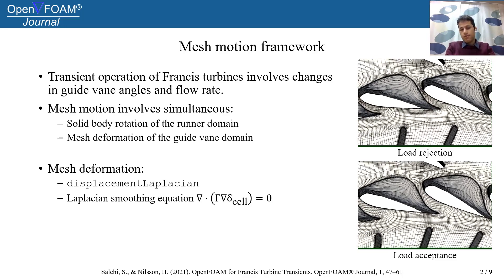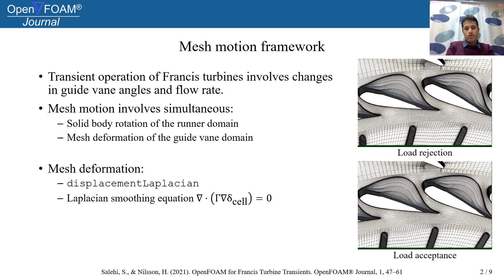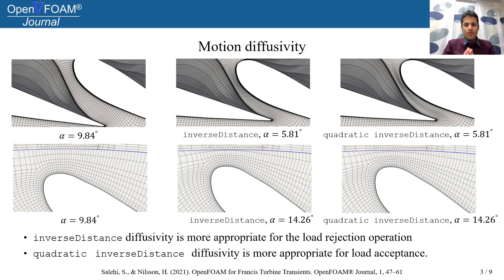In this study we use displacement Laplacian for the mesh deformation. One can also use a velocity Laplacian solver. We first studied the effects of mesh motion diffusivity on different transient operations. In load rejection, the cells in the middle of the guide vanes sustain the highest deformation — these cells here and here.